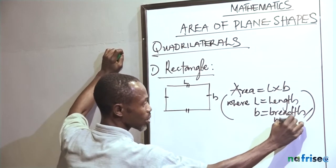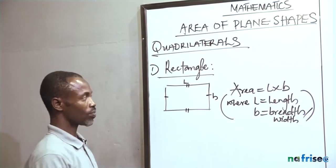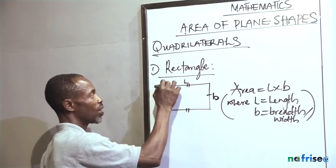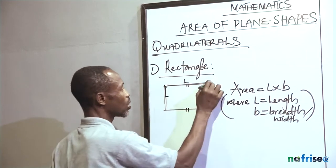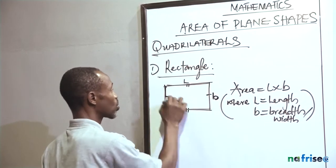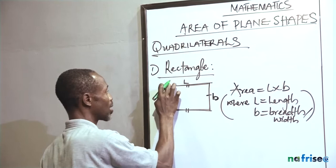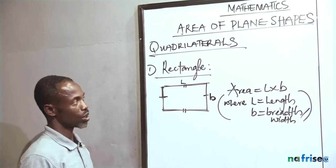Sometimes we call this breadth width. When you hear the word width, it can also be referred to as the breadth of the rectangle. So the area of the rectangle is simply length times breadth—multiply the length and the breadth of that shape.